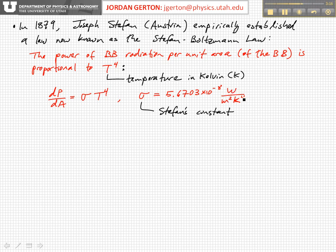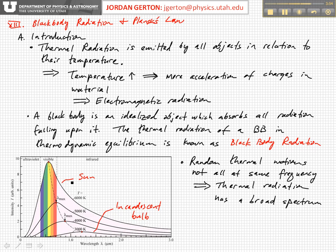If you multiply sigma times T to the fourth, you get watts per meter squared. This also indicates that this law is only appropriate once you've converted your temperature scale to Kelvin. This is just an empirical law, and furthermore it doesn't say anything about the shapes of these curves — and it's the shapes of those curves which was the point of confusion and consternation for physicists of the day.